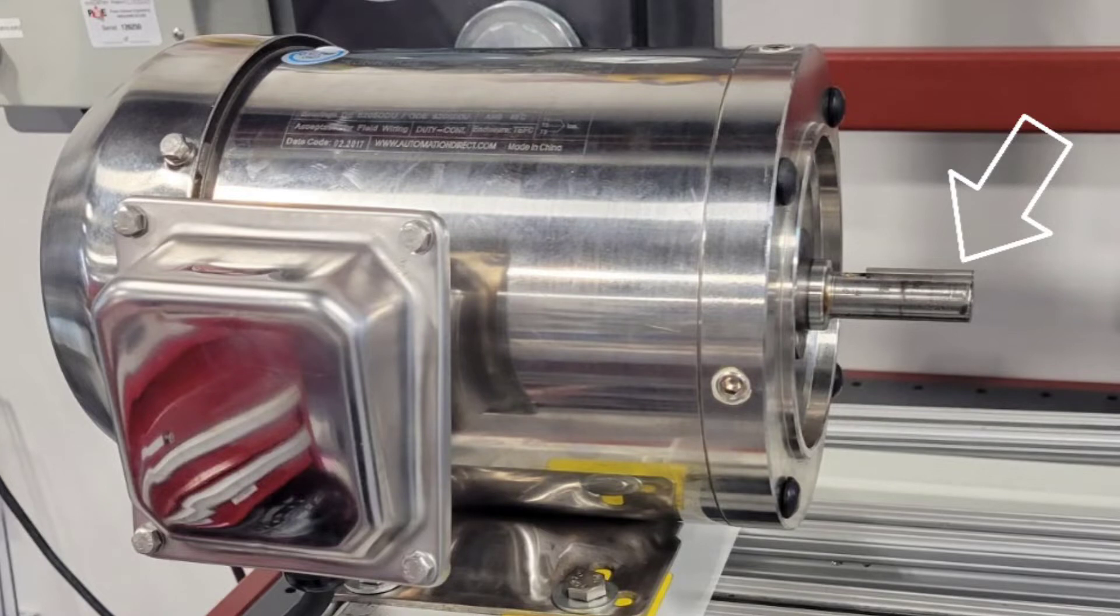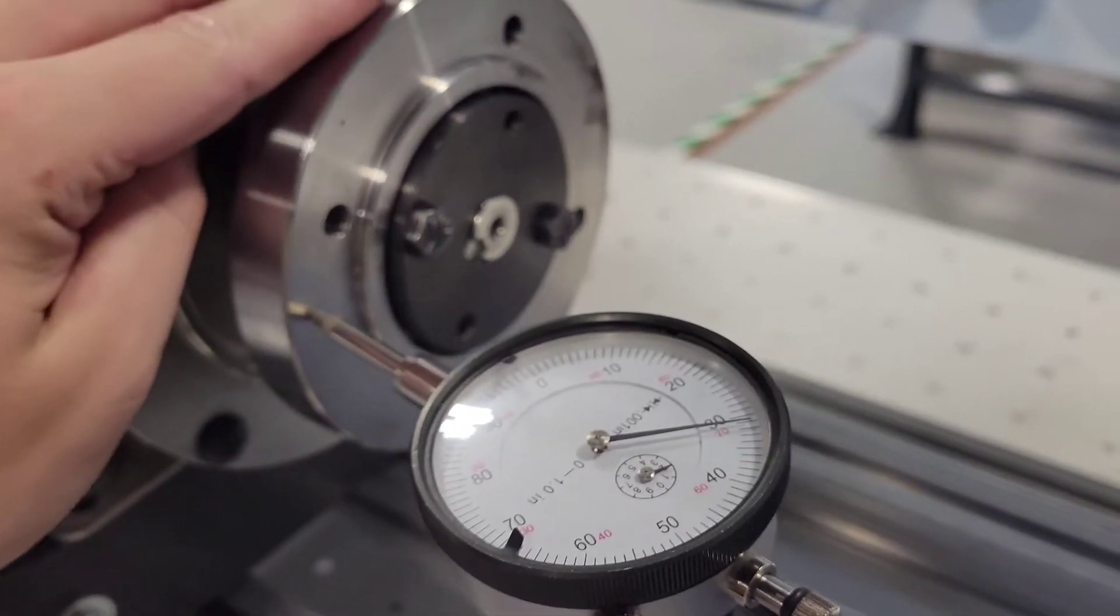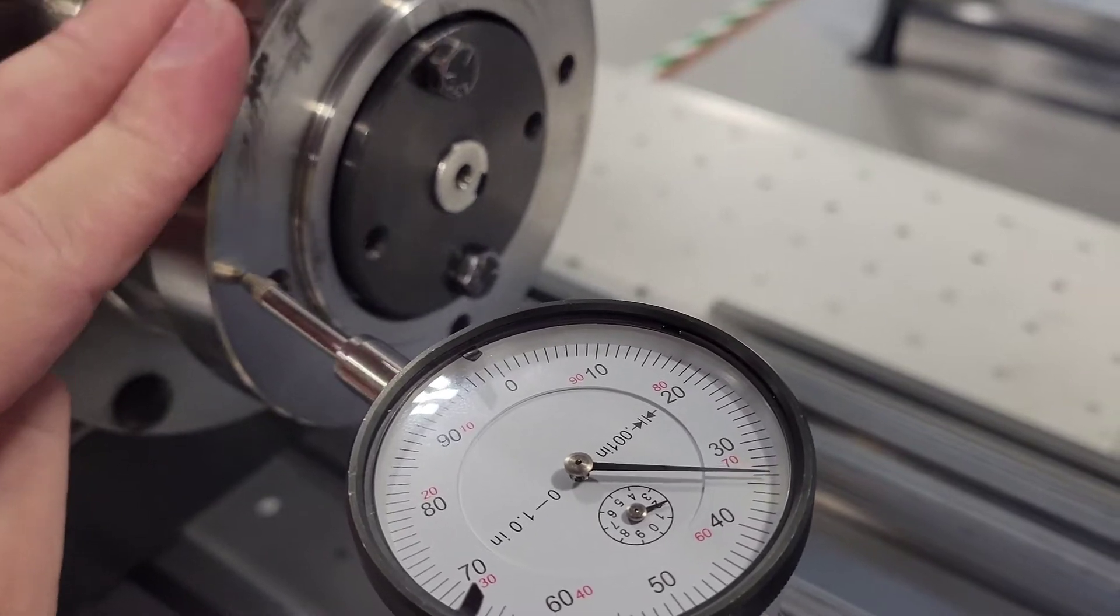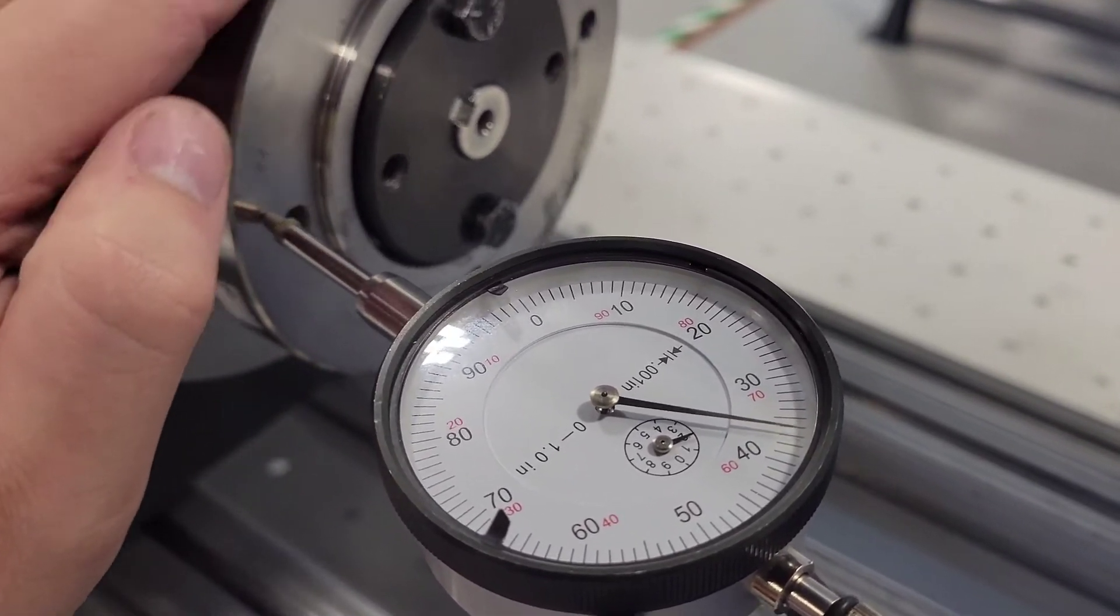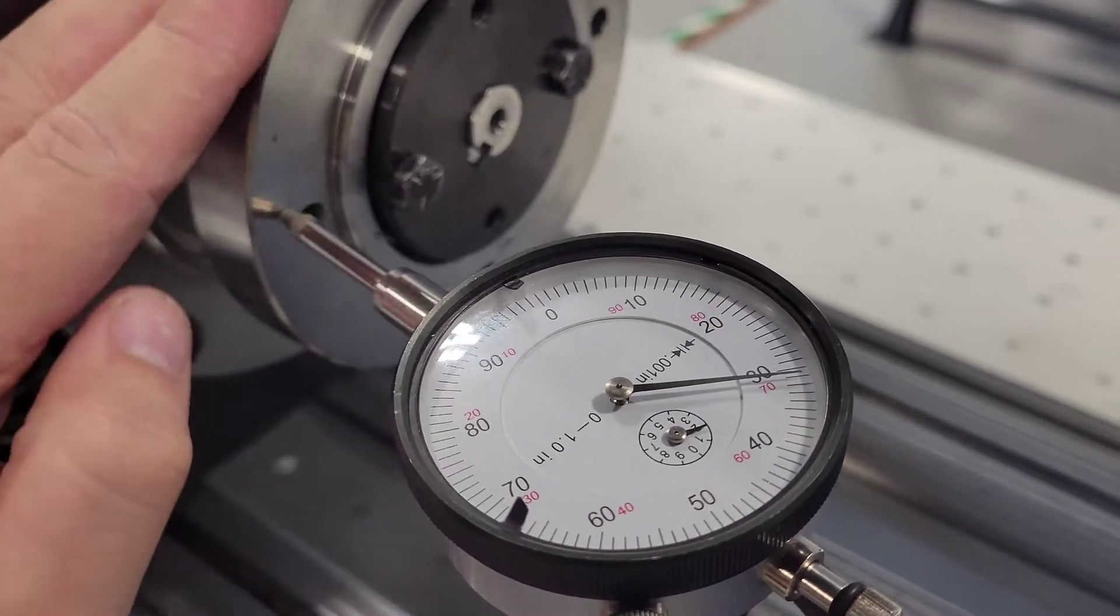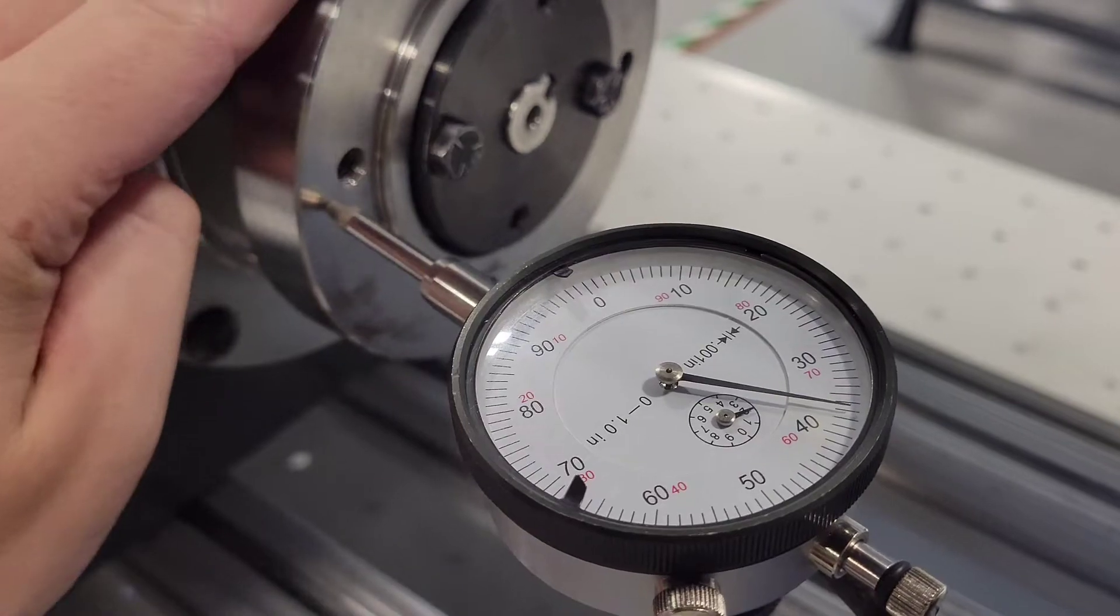Once that's on there, we are going to use a dial indicator to make sure that the surface is as flat as possible. If not, we can make some adjustments with a soft end hammer. As you can see, there is some tolerance but it's nothing too drastic that's going to mess up our system in the end.